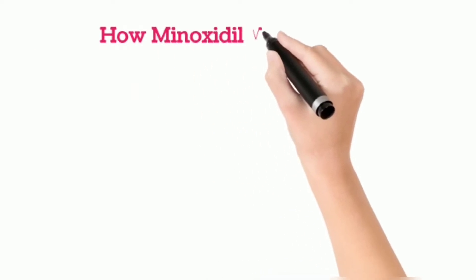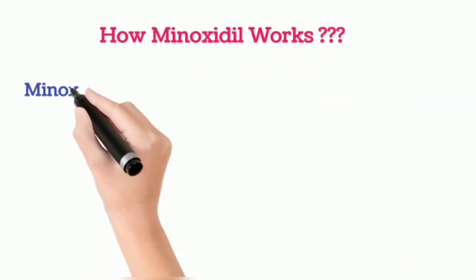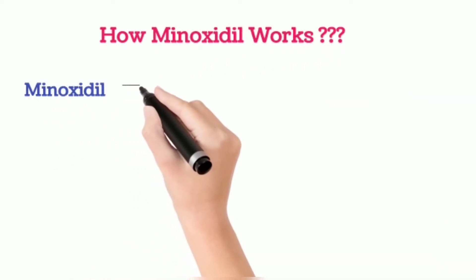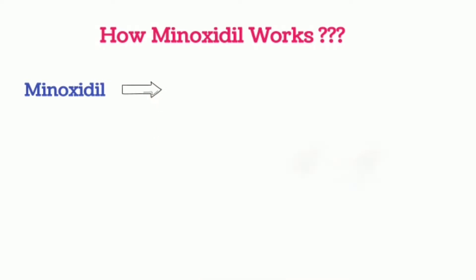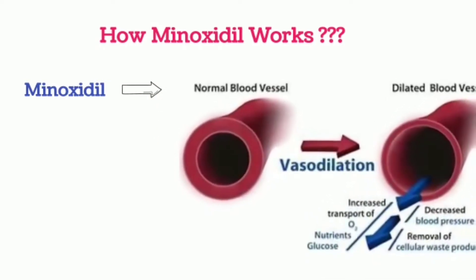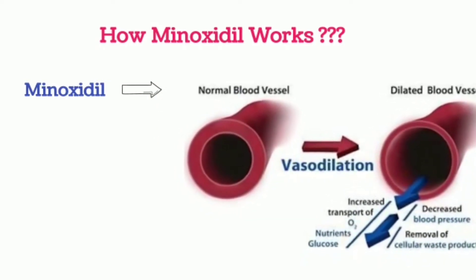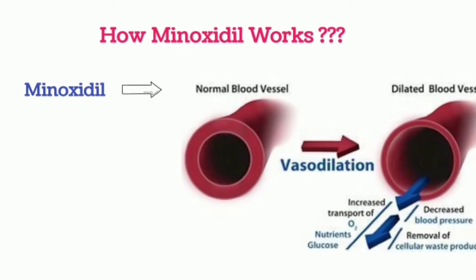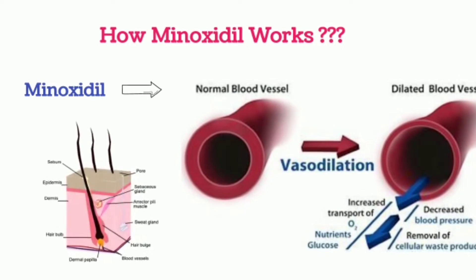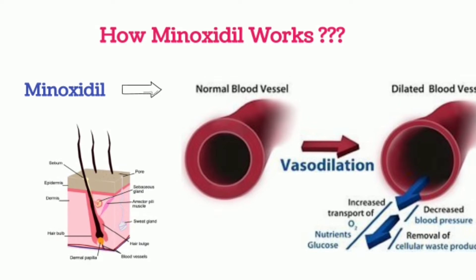How does minoxidil work? Whenever minoxidil is applied, it dilates the blood vessels, so it increases the blood supply, oxygen, and nutrients to the hair follicle. It promotes new hair growth and prevents hair cell death.